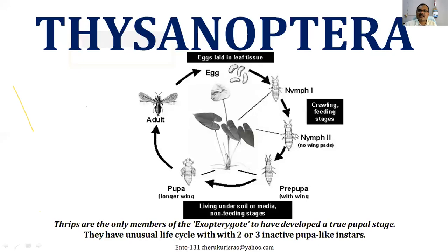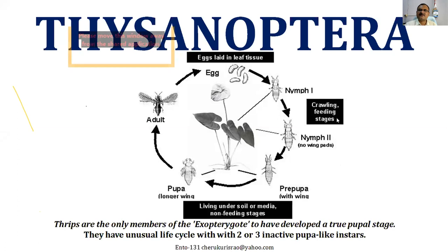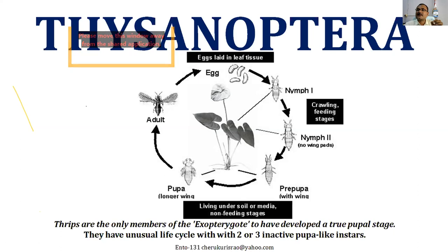The biggest problem with these insects is they have lacerating and sucking type of mouthparts. They lacerate the tissue and suck the sap from plant material — leaves and flowers. Whenever you buy a rose flower, the rose petals have white color markings — that damage is caused by thrips. Looking at the life cycle: it is similar to hemimetabolous insects — egg, nymph, and adult — but the important point is this is the only hemimetabolous order which has a pupa stage: egg, nymph, pupa, and adult.